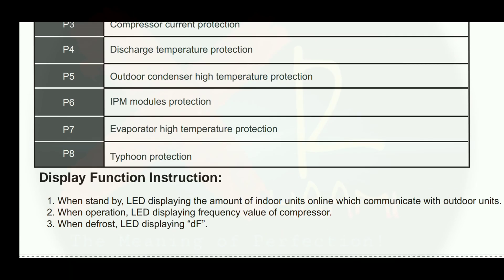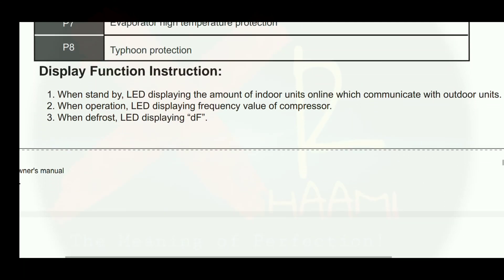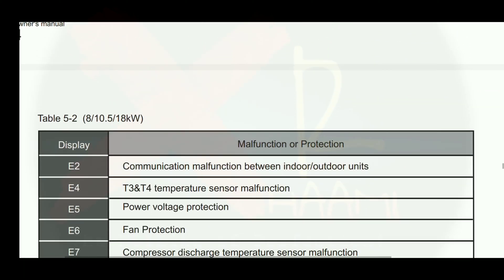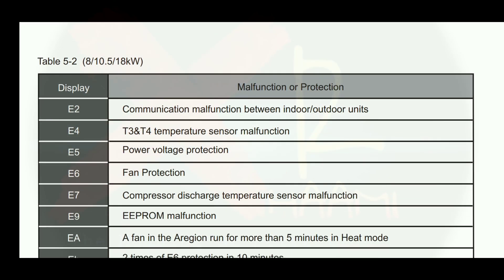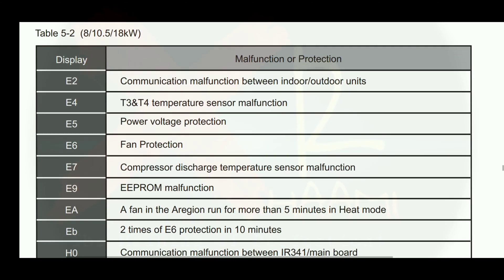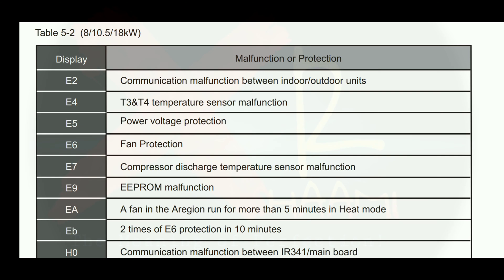Let's see the display function instructions. When the air conditioner is on standby mode, the LED displays the number of indoor units online which communicate with outdoor units. In operation mode, the LED displays the frequency value of the compressor, and during defrost, the LED displays DF. Note: this table is only for 8, 10.5, and 18 kilowatt air conditioners.